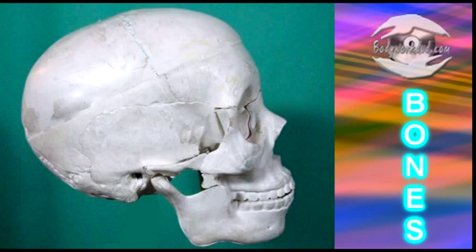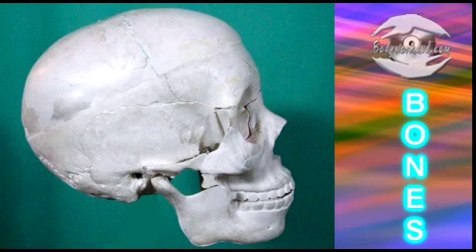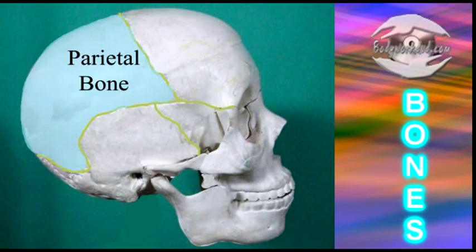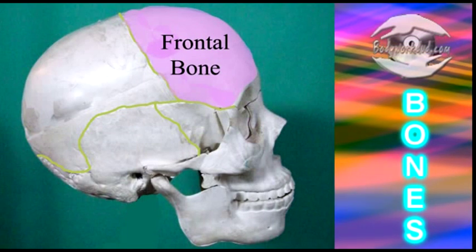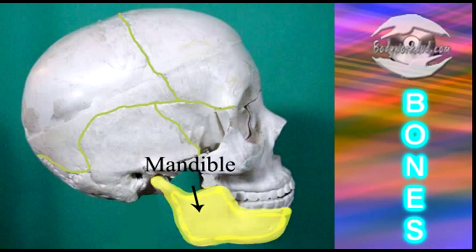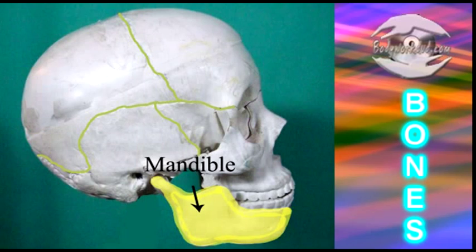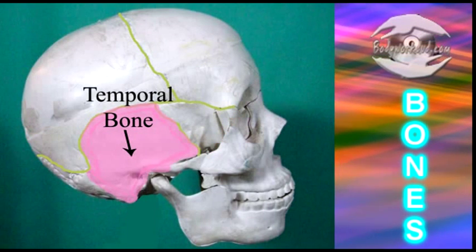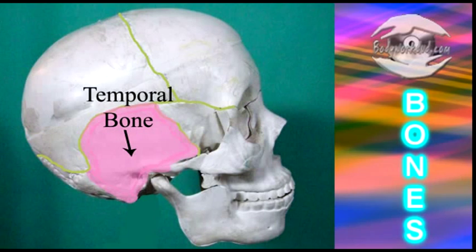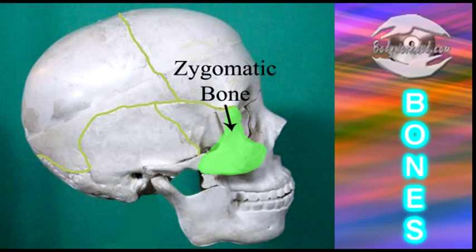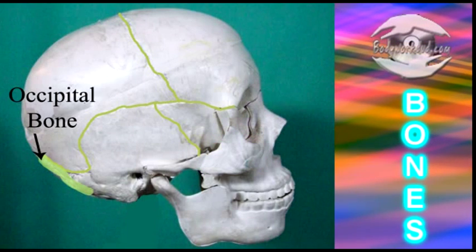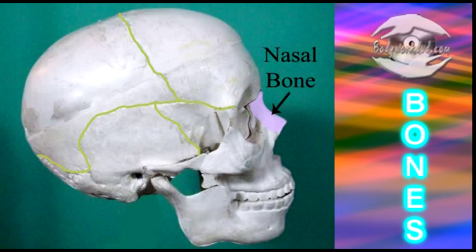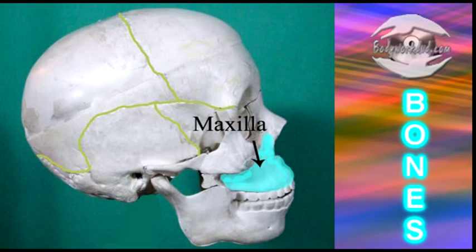Today we're going to go over the bones and other structures on the lateral side of the skull. First, let's identify some bones. Here we see the parietal bone, the frontal bone, the mandible, the sphenoid bone, the temporal bone, the zygomatic bone, the occipital bone, the nasal bone, and the maxilla.